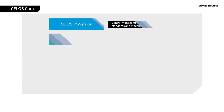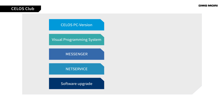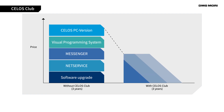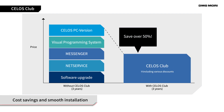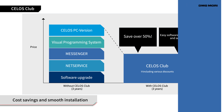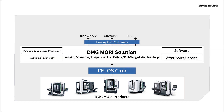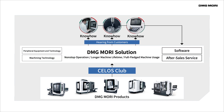As you can see, Celos Club unleashes the full potential of Celos, and the variety of services continues to enhance the customer's productivity. With this package, you can save more than half off the regular price, and it also assures a smooth installation in your factory. DMG Mori will continuously offer products and services, including Celos Club, to satisfy customers' requests.